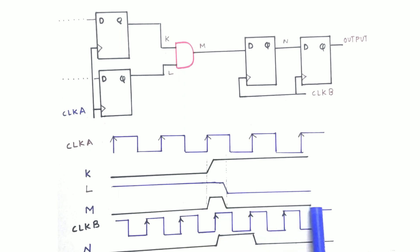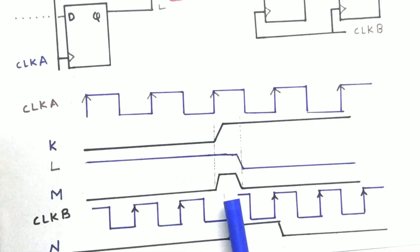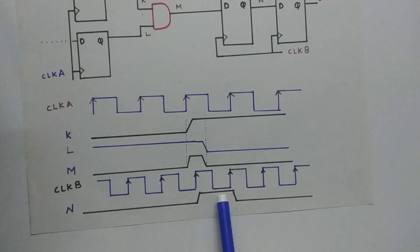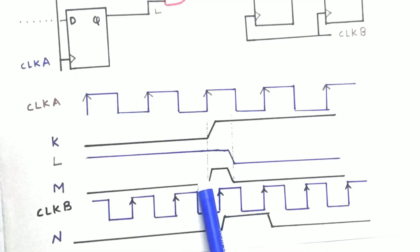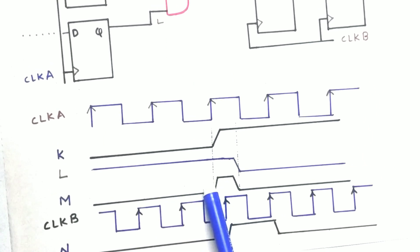So we are sending this signal M from clock A domain to clock B domain. Suppose the M signal falls at the clock edge of clock B, then the output of the first flop that is N will be having a one for one whole clock period, but actually the signal that should be transferred should be the short period of time the one should be high.